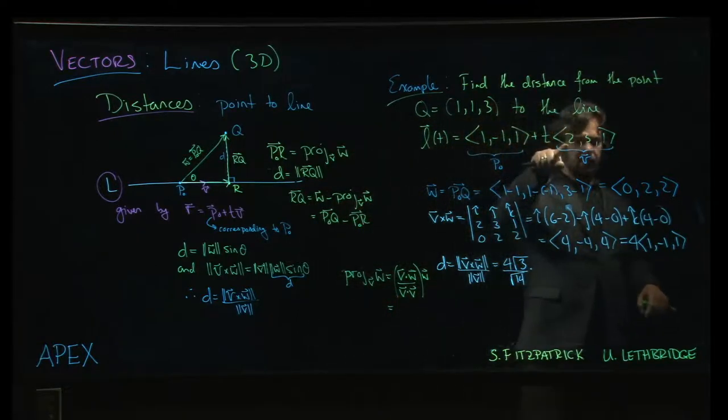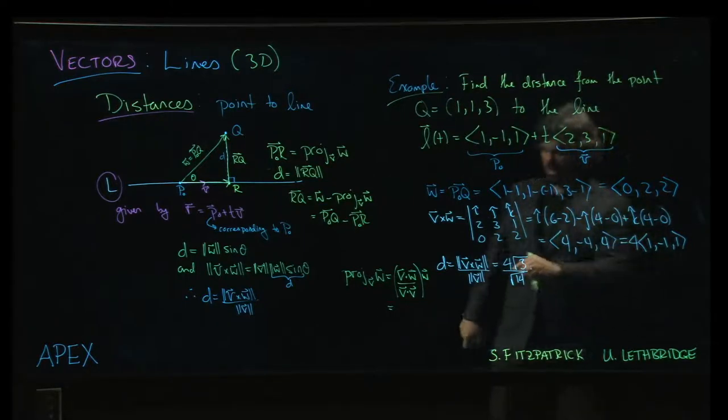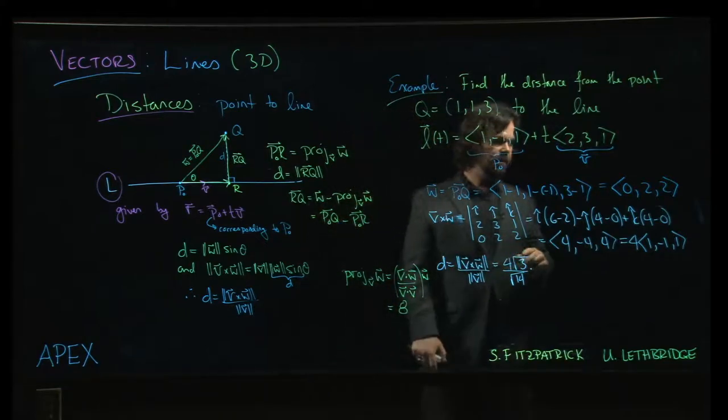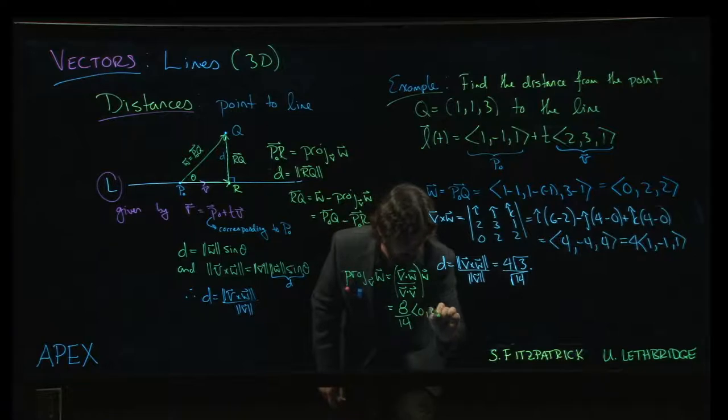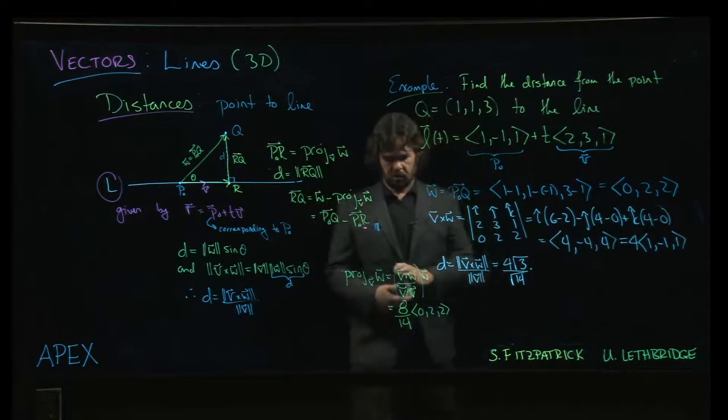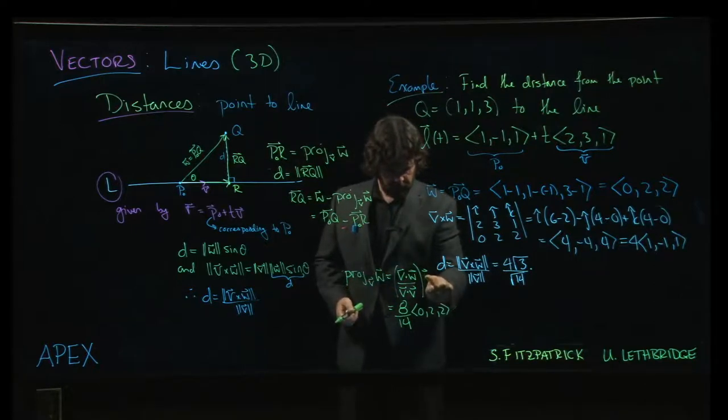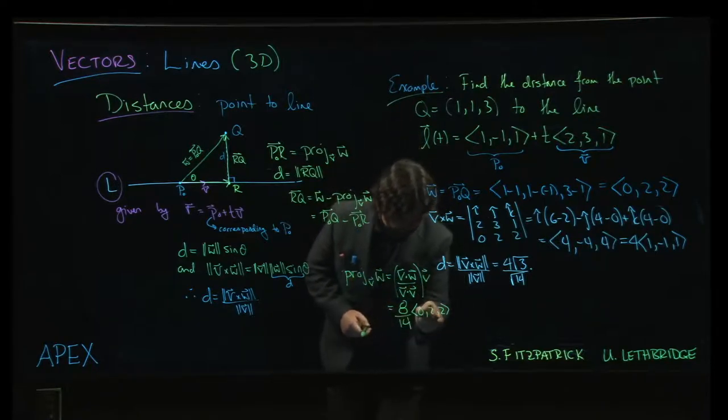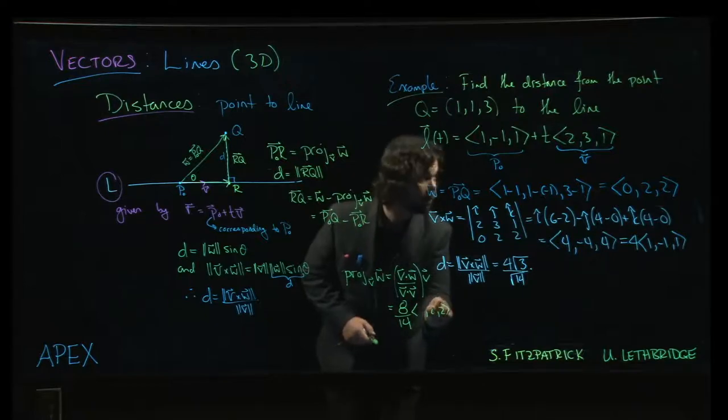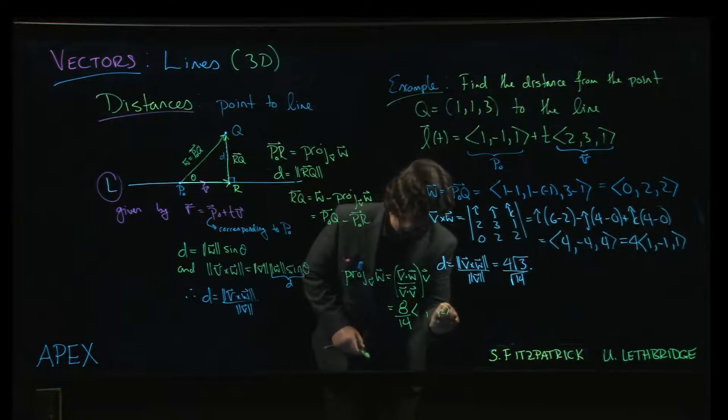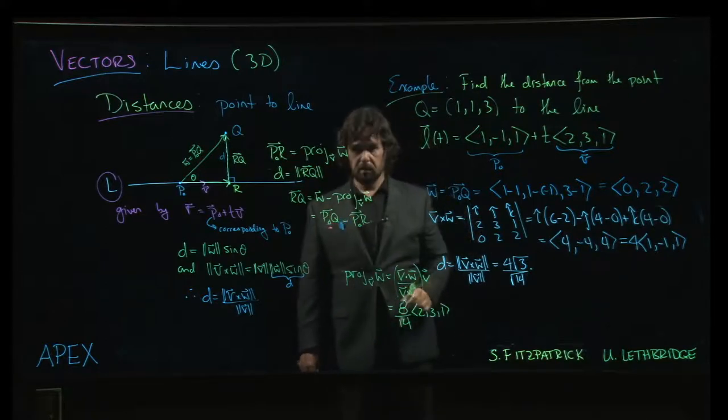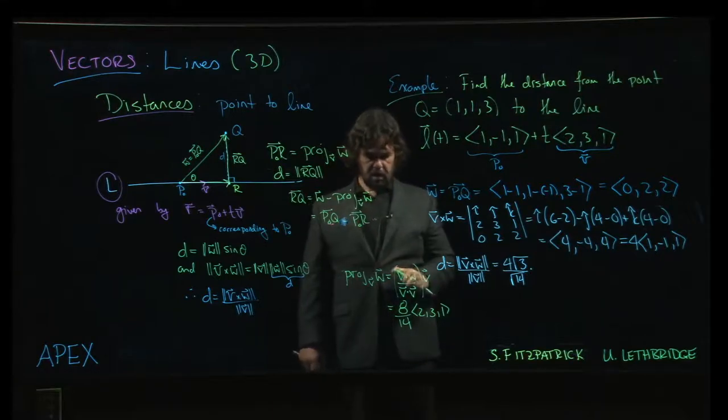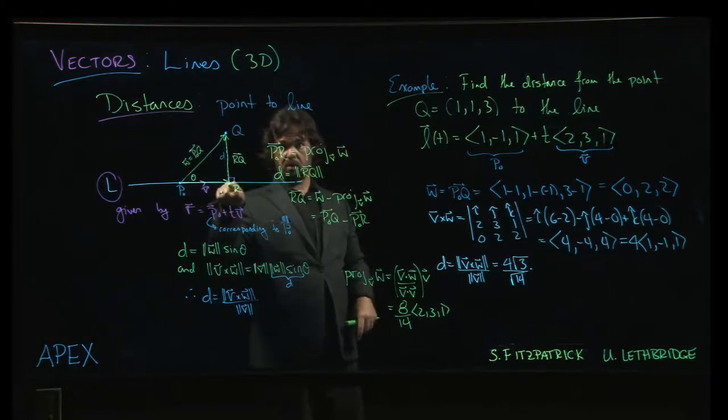So remember that this looks like v dot w over v dot v times v. So here's v. Here's w. The dot product is going to be 0 plus 6 plus 2, which is 8. V dot v is 14. We sorted that one out earlier. 8 over 14 times the vector, sorry, not w. I've been doing these videos all day. My brain is starting to melt. That should be v. At least I caught my mistake right away. 2, 3, 1. So that's 4 over 7. So that projection there gives us the vector here going from p0 to r.